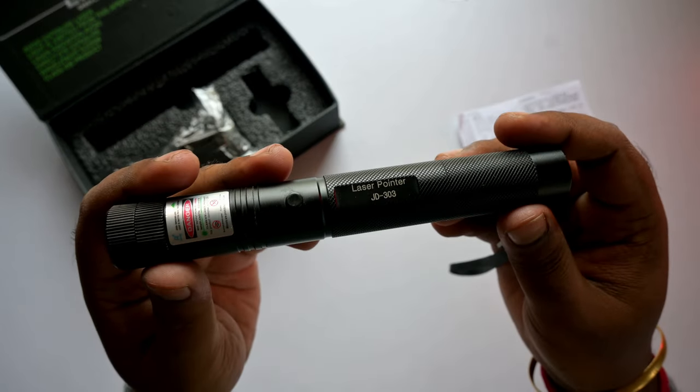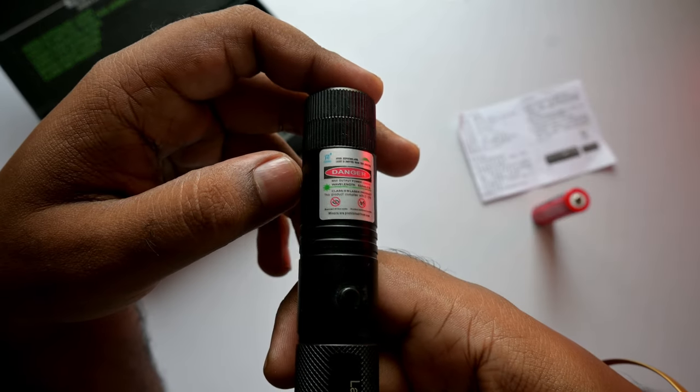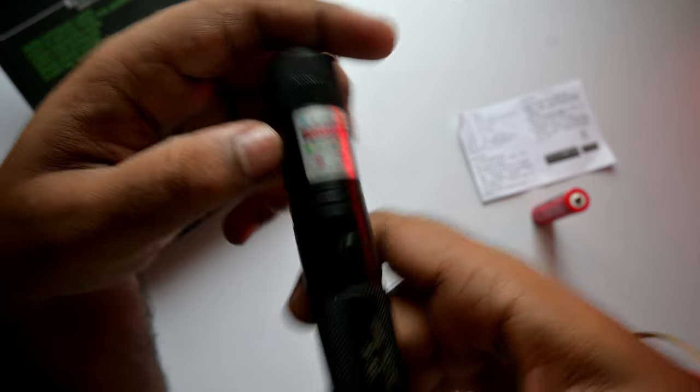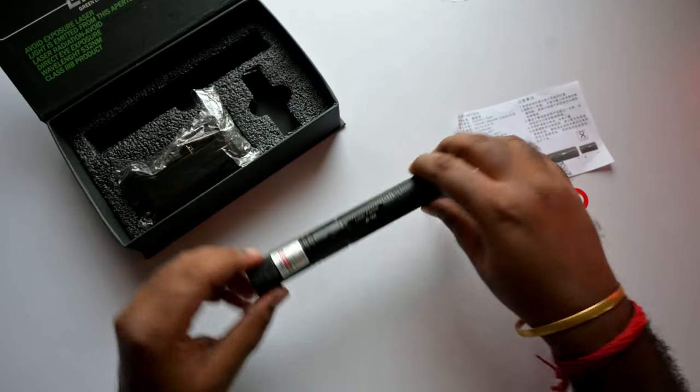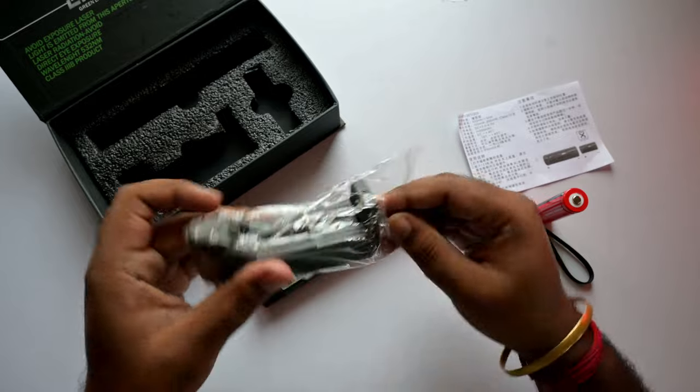You can see the model name JD303. Some instructions about this light. I don't know much about it. Here is the charger that comes with this box.